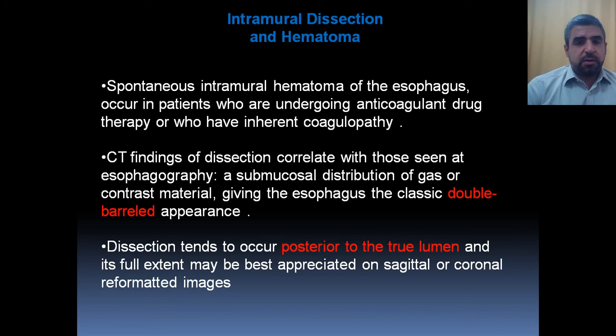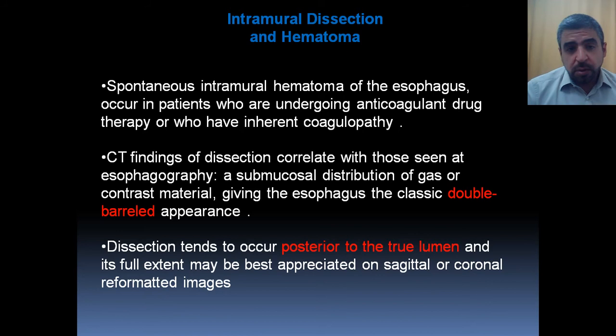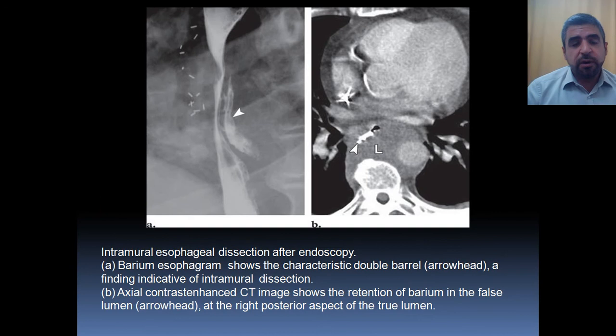Just spontaneously, without any previous injury or trauma, intramural hematoma can occur — usually there is either inherent coagulopathy or anticoagulant drug therapy. The CT findings of dissection correlate with those seen at esophagography: sub-mucosal distribution of gas or contrast material gives the esophagus a characteristic double-barrel appearance. Dissection tends to occur posterior to the true lumen, and its full extent may be best appreciated on sagittal or coronal reformatted images. For example, you can see here the mucosal line and the obvious double-barrel appearance of dissection.